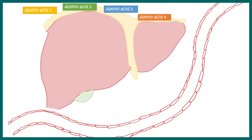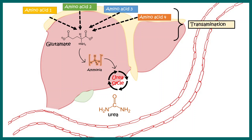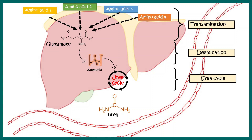Let's say you have four amino acids. Each of these amino acids has amino groups, and all of them would ultimately form glutamate. These amino acids can be converted to glutamate, which can then be converted to ammonia — the amino group is taken away. This ammonia is toxic and can go through the urea cycle to form urea. The first part is transamination; the second part, from glutamate to ammonia, is known as deamination; and lastly there is the urea cycle.